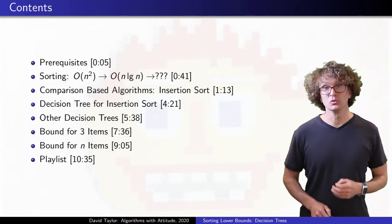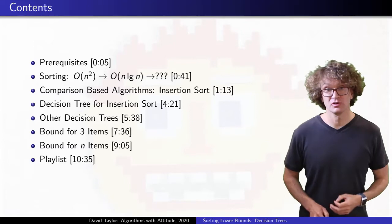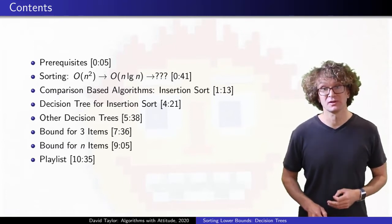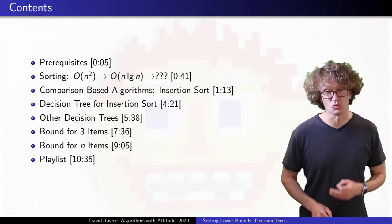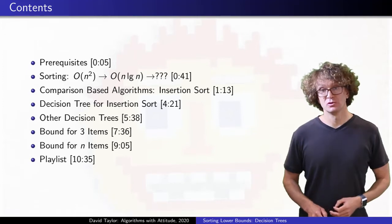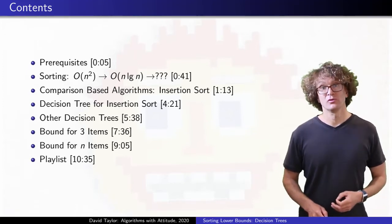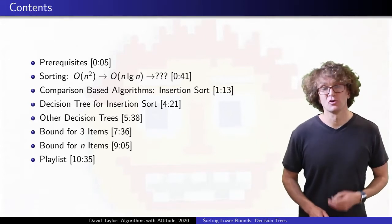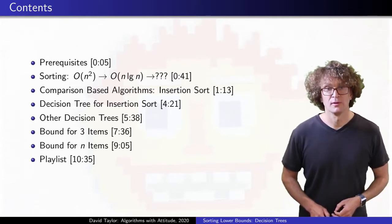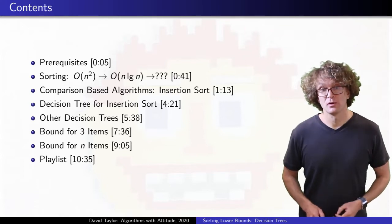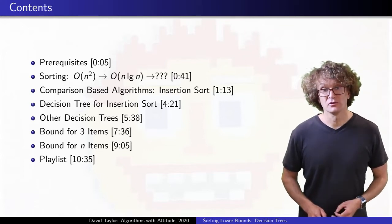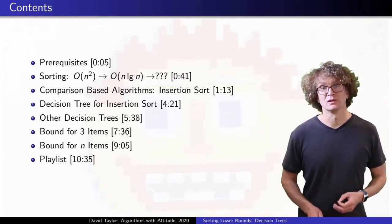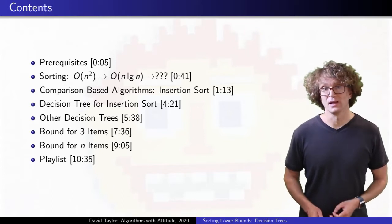After some motivation, I use it to explain what a comparison based sort is, and specifically look at how it acts on three elements. We will introduce decision trees and how they relate back to the algorithm, and show trees for each of those previously listed sorts. We use those trees to make a lower bound argument for sorting three items, and then generalize that to prove a lower bound for sorting n items.